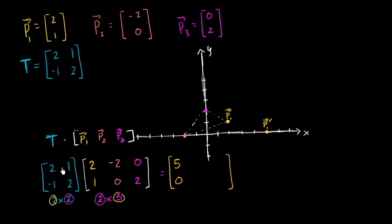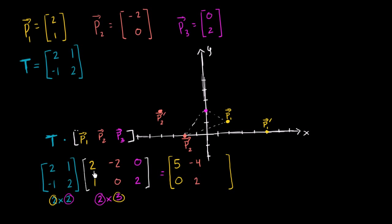Now let's go to P2. Two times negative two is negative four, plus one times zero — so it's negative four plus zero, which is just negative four. Then negative one times two is positive two, plus two times zero, which is just zero. So it's positive two plus zero, which is just two. So negative four comma two — negative four, comma two is right over here. So if this is P2, this is P2 prime, the position that position vector P2 prime would specify.